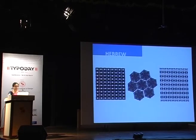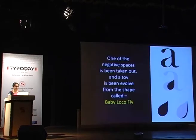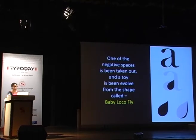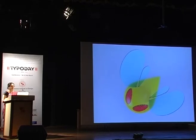This is how we tried to experiment. One of the negative spaces has been taken out and a toy has been evolved from the shape, called Baby Loco. So we have taken the negative space, tried to play with it, and made forms out of those shapes — from typography, from the negative spaces basically, to the product as an inspiration.